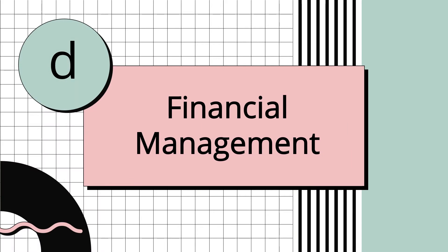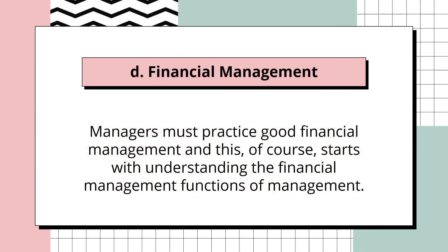The next functional area is financial management. Gaining profit is the main goal of businesses. To attain this goal, managers must practice good financial management, which starts with understanding financial management functions. Since the goal is to gain profit, it is very important to also manage operations, marketing, and human resources — and financial management is what makes it possible for the business to continue operating.